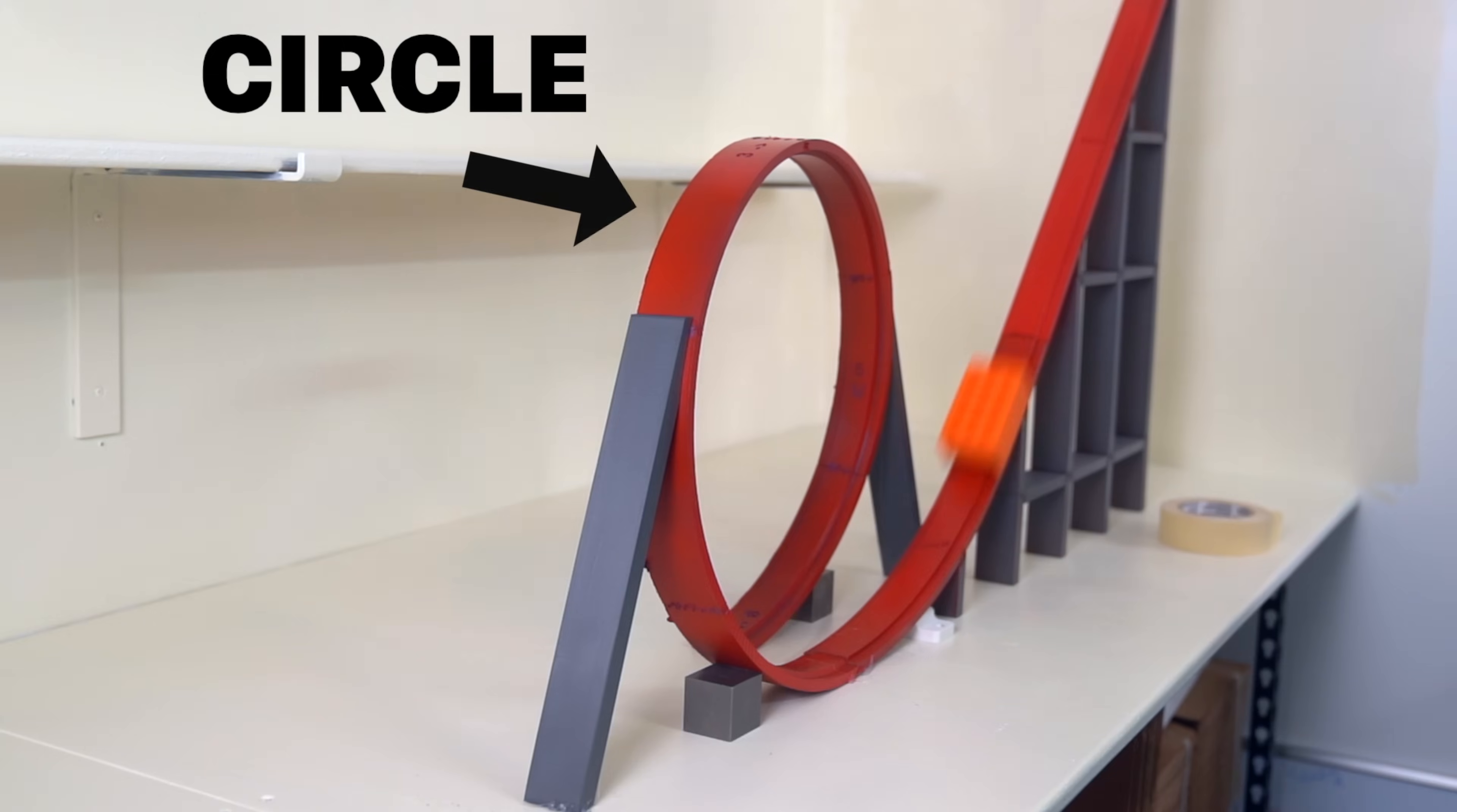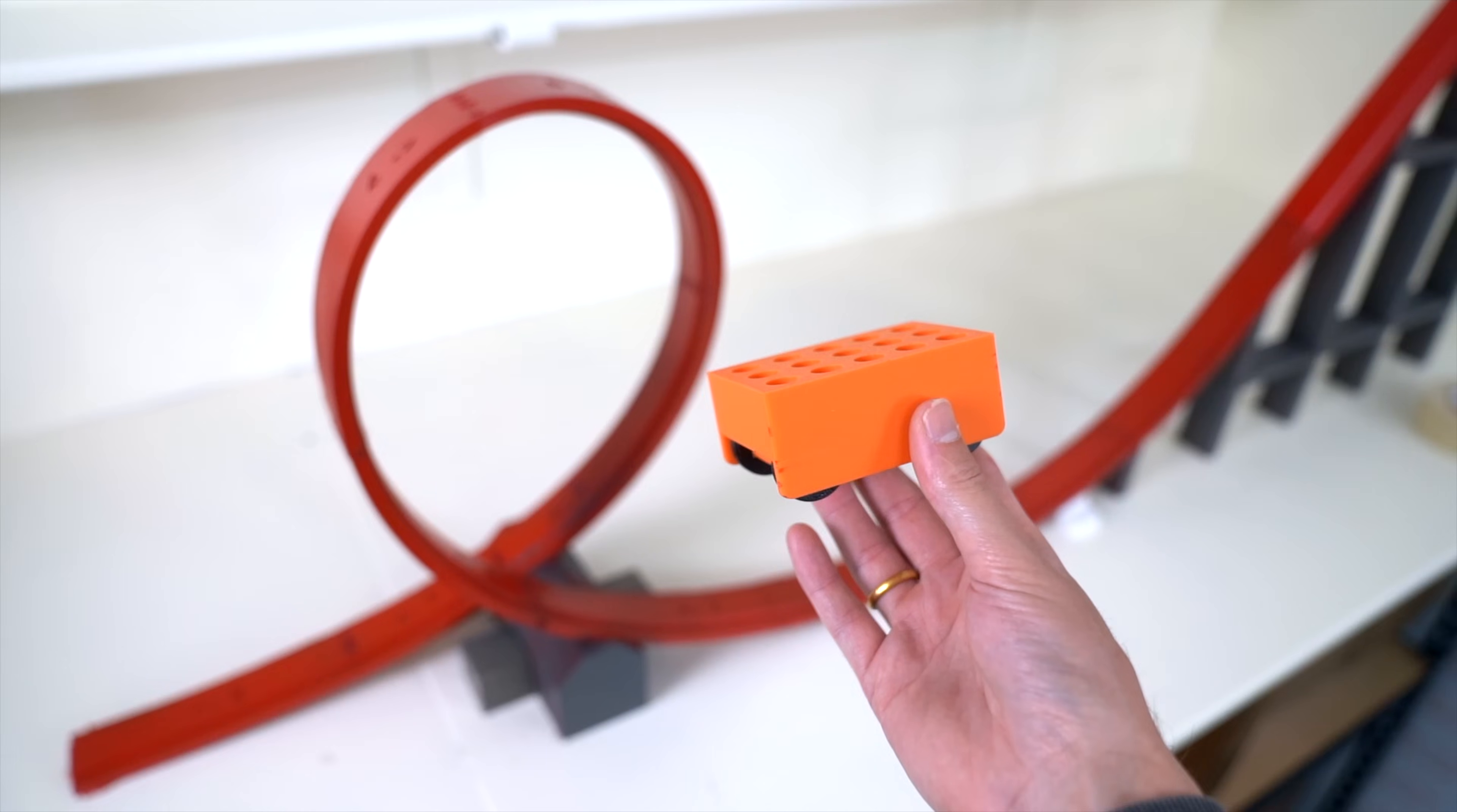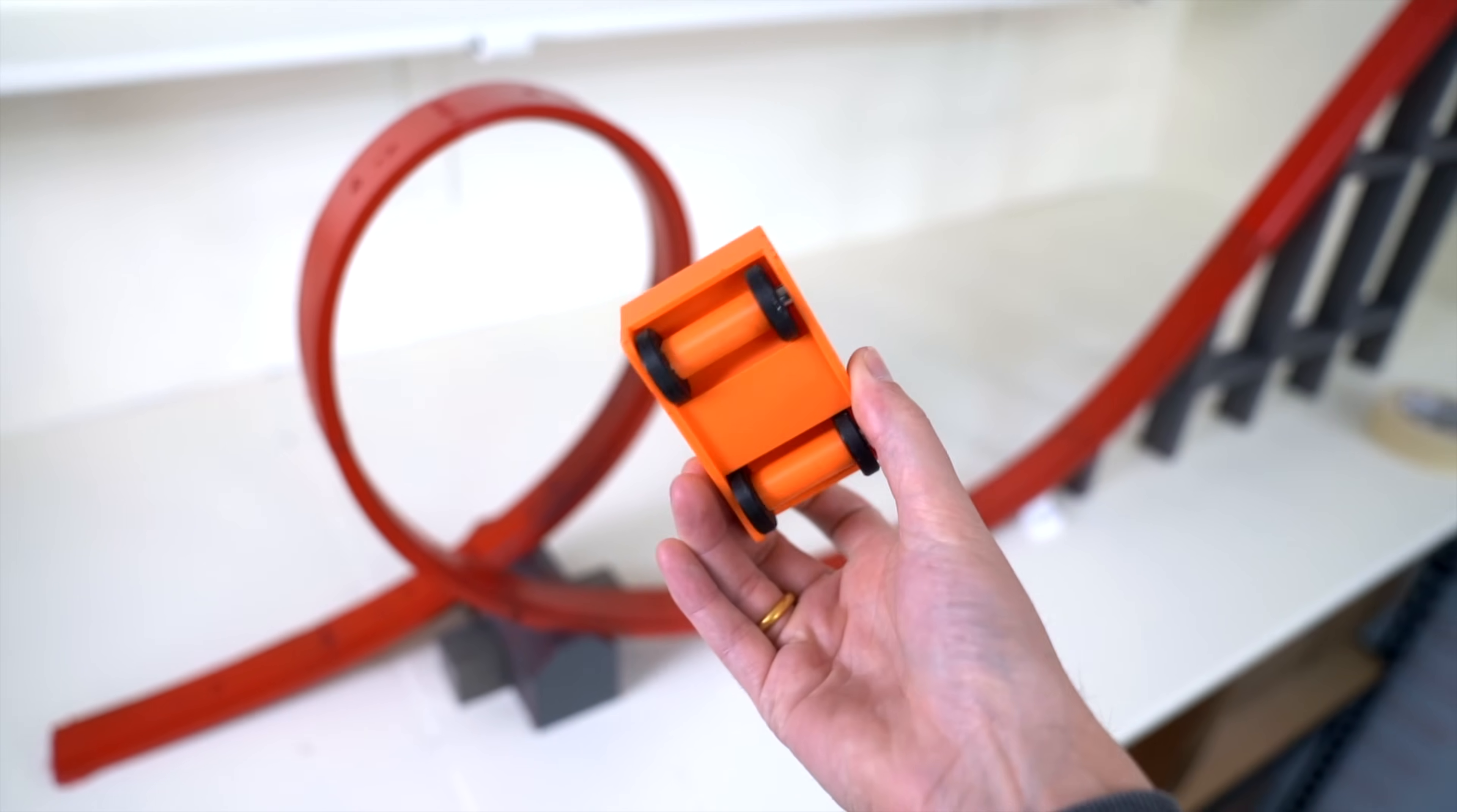So what makes the teardrop shaped loop so much better than the circular shaped loop? It's not that the roller coaster car can't go around a circular shaped loop. With enough speed it can easily go around both shapes.